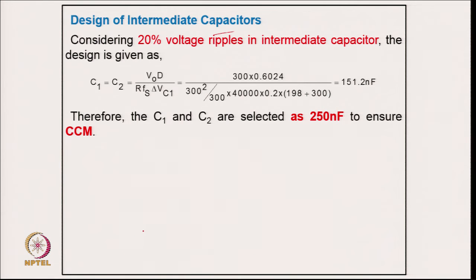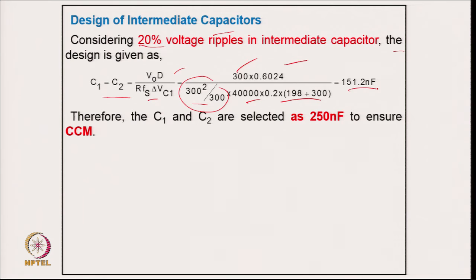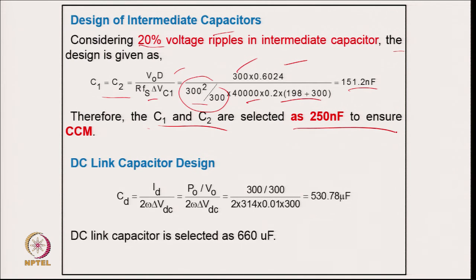Coming to the intermediate capacitor design: considering 20 percent ripple across it, the capacitor is calculated from the relation for equivalent load resistance, output voltage, duty cycle, switching frequency, and ripple voltage. This gives 151.2 nF. To maintain continuous voltage across C1 and C2, 250 nF is selected.